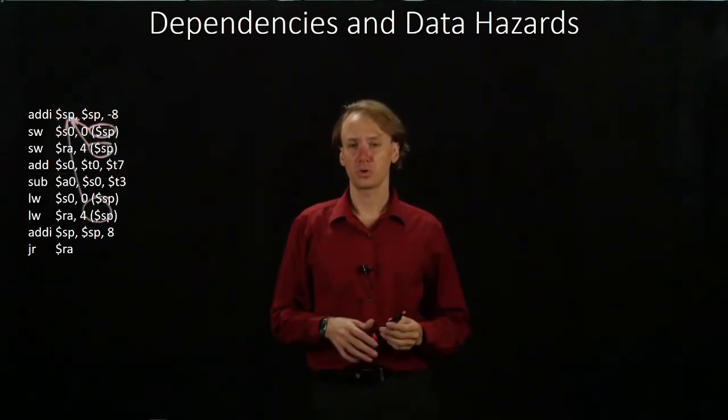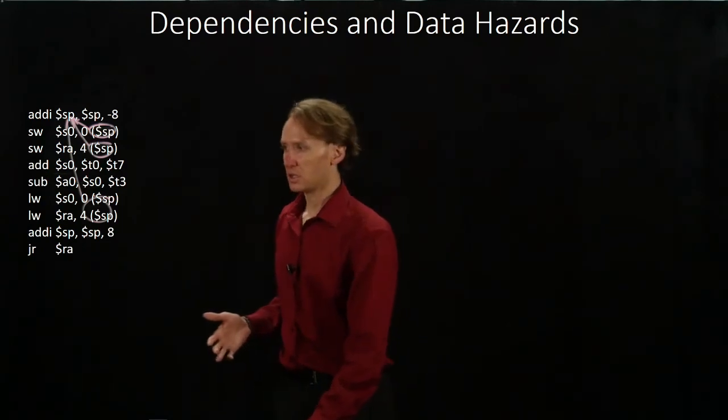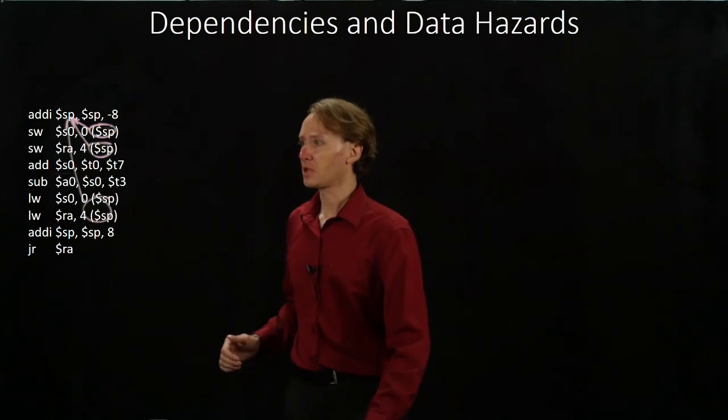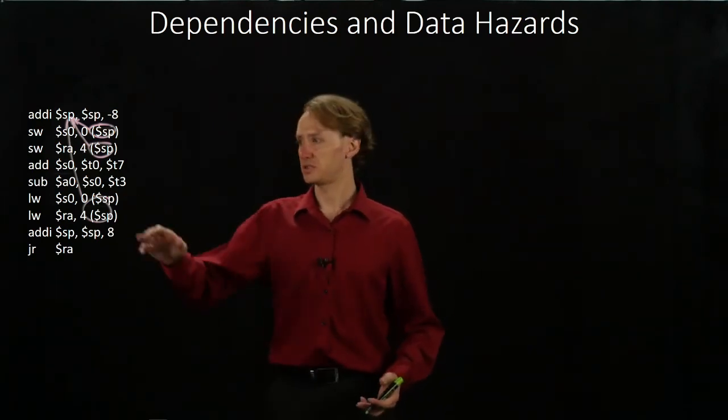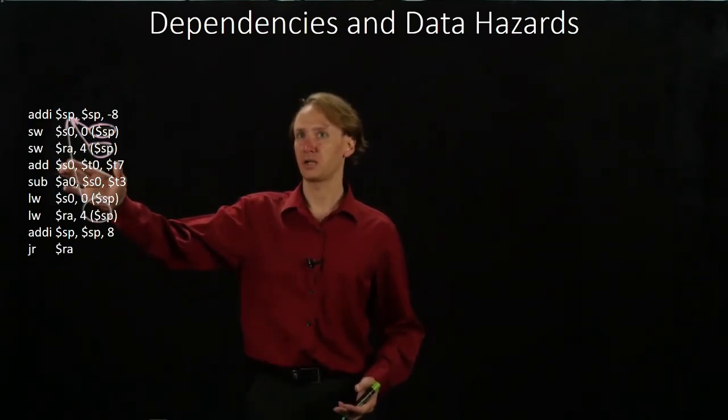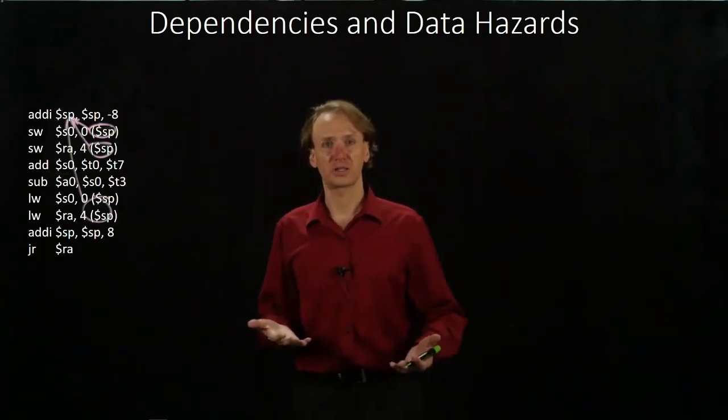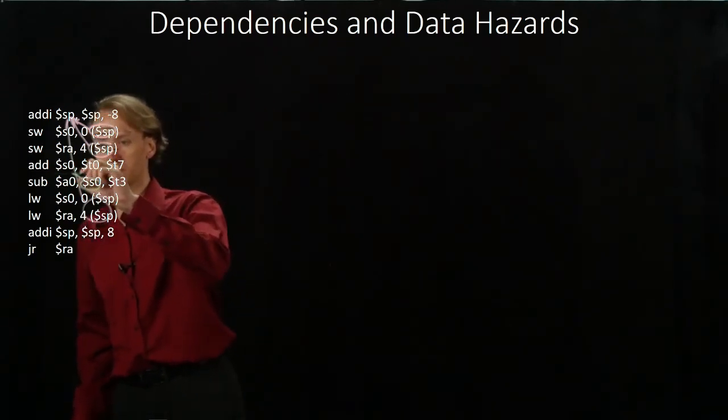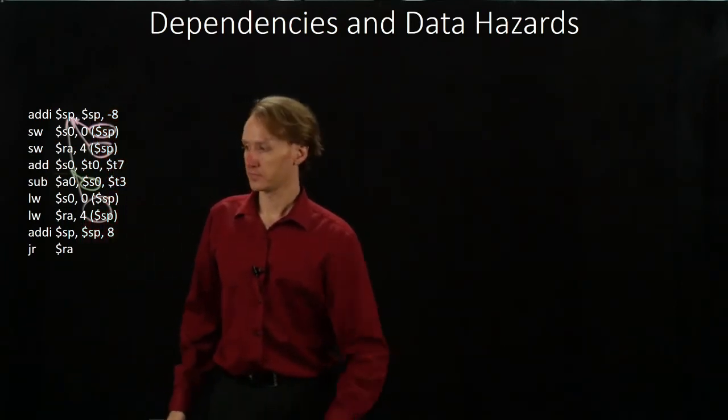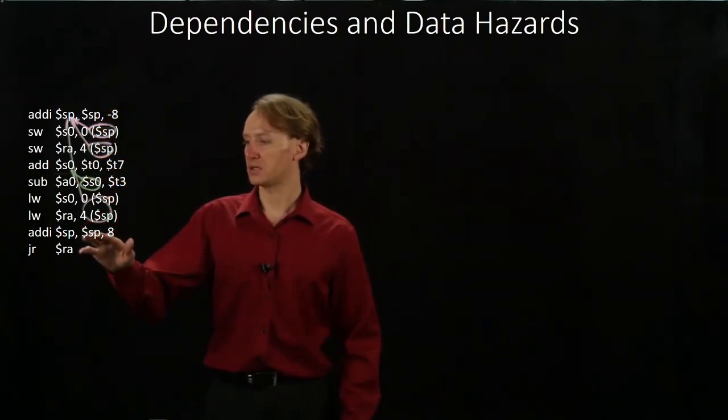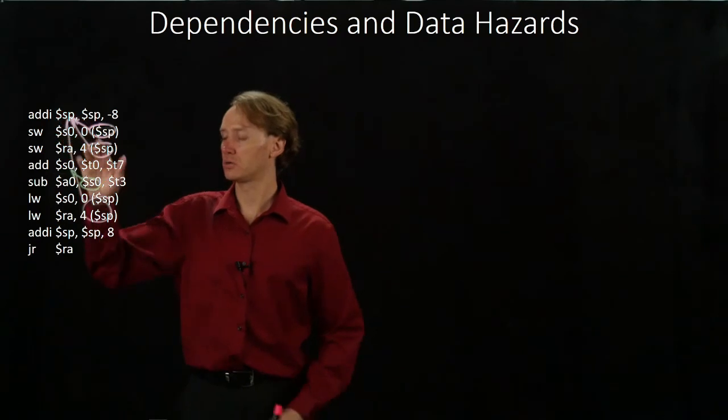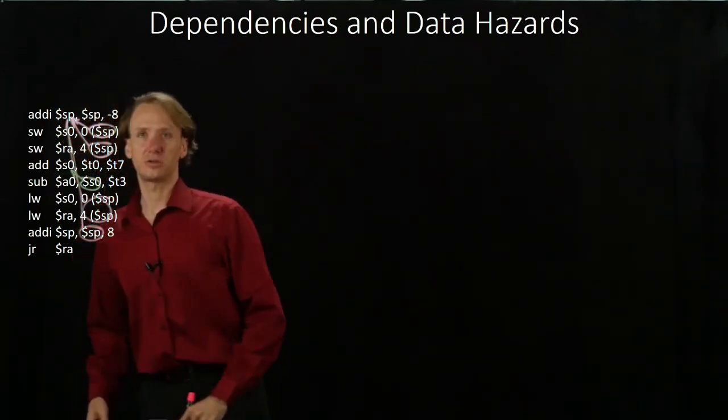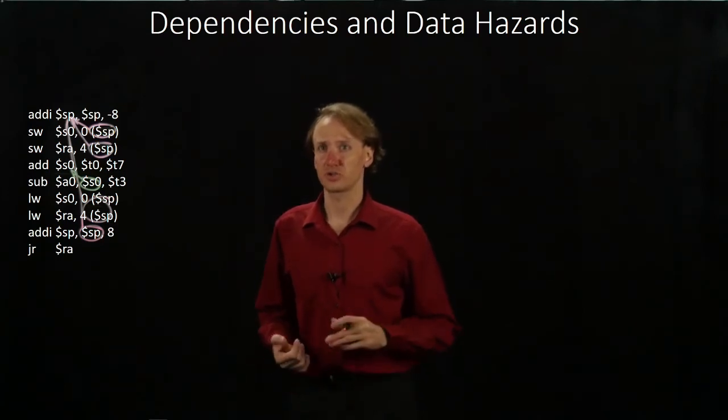Most of those aren't going to produce any data hazards because they're well away from where it's actually being changed. I've also got a dependency here in the middle where we're updating S0 and then our subtract instruction wants to use that as well. Then we have one more dependency down at the end where we're updating the stack pointer. So that's also dependent on the original stack pointer change.